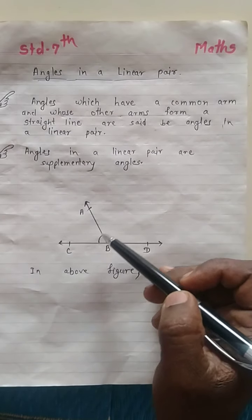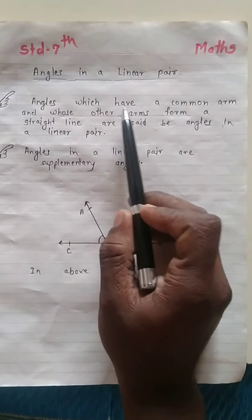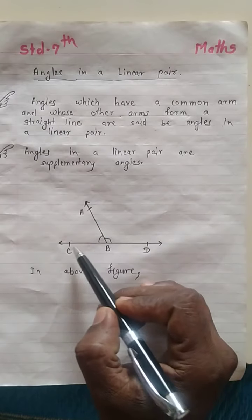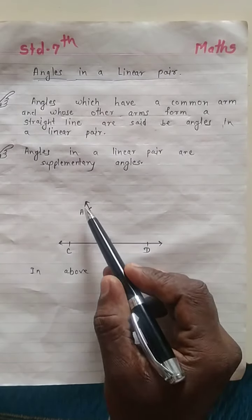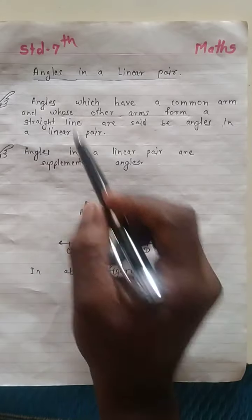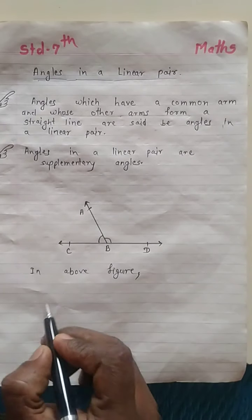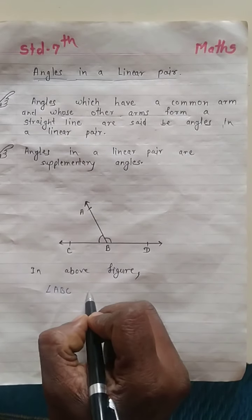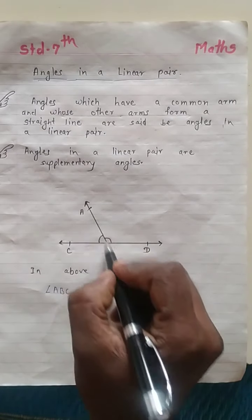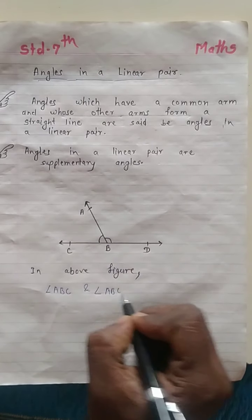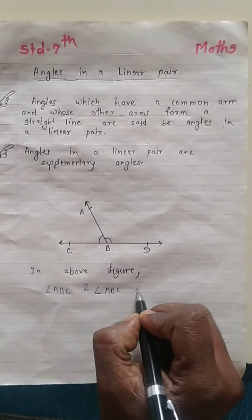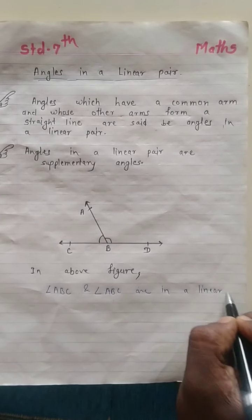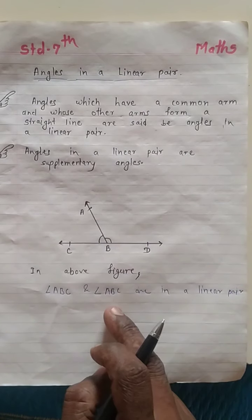See this figure. The definition states angles which have a common arm. Here are two angles — angle ABC and angle ABD. These two angles form angles in a linear pair. In the above figure, angle ABC and angle ABD are in a linear pair.